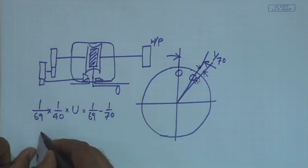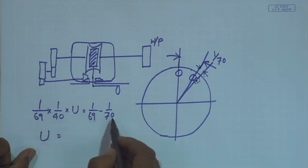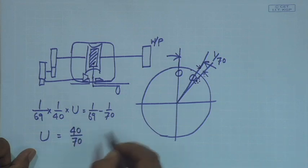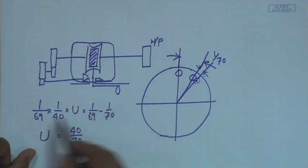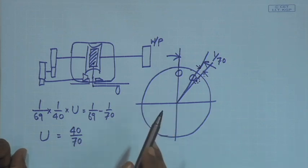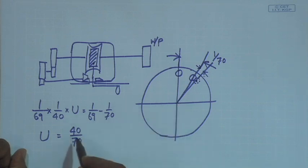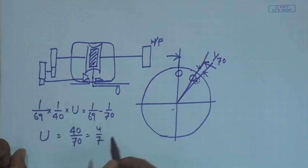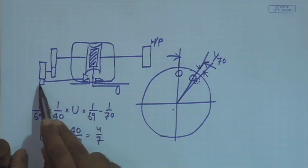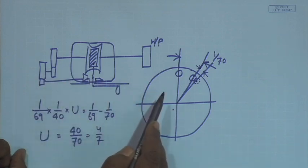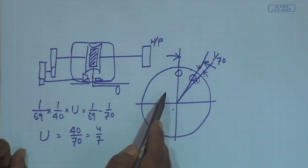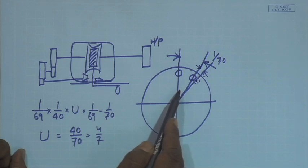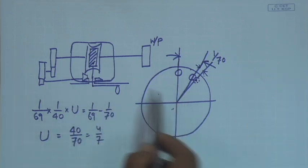So basically we have derived the equation once again: 69 will cancel out and we will have 40/70. This yields a numerator of 1, 69 cancels and 70 remains. So the change gear ratio has to be 40/70, having a virtual hole circle of 70 holes — which is not actually there. This gear ratio is connected to this particular hole circle. This means the gear ratio is basically 4/7. If you can provide a gear ratio of 4/7, the index plate will have the required motion for indexing for a 70-hole circle.